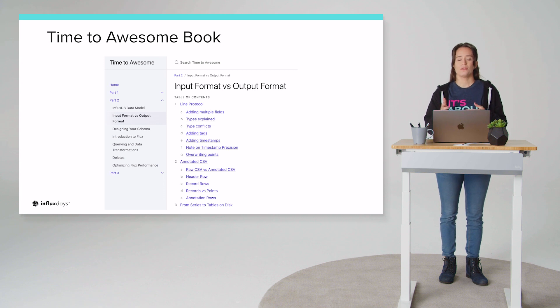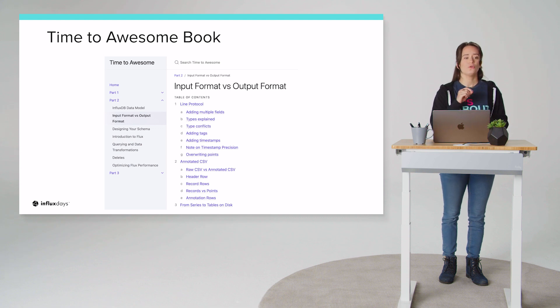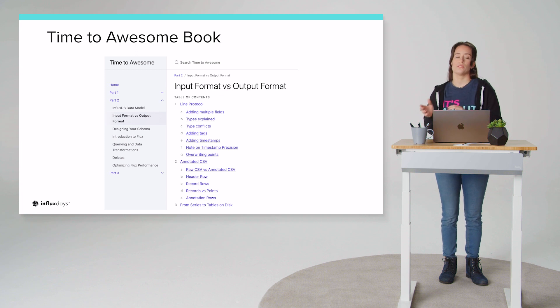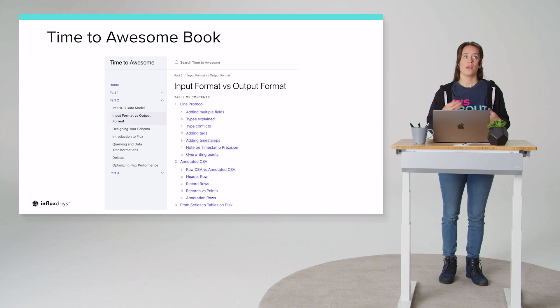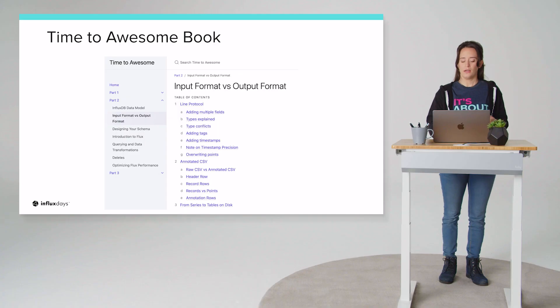I also want to mention the Time to Awesome book. This was a book that was written by myself and Rick Spencer. And in this book, it was particularly written to target developers that are looking to build applications on top of InfluxDB. And part two is really all about understanding the data model, the input and output formats, and how Flux fits into them. The reason why I really enjoy part two for learning Flux is because there's a cohesive example throughout the entire book. So it really helps you, or it helps me, build my knowledge and understanding when I'm working off one example the entire time. So I recommend checking that out. Also there's information about optimizing Flux performance as well. And so if a book is how you like to learn, I recommend checking it out.